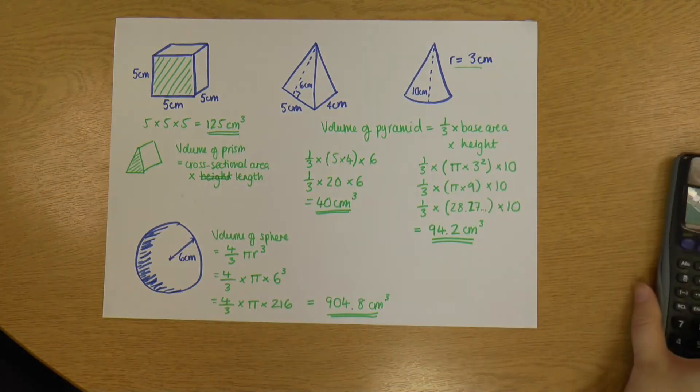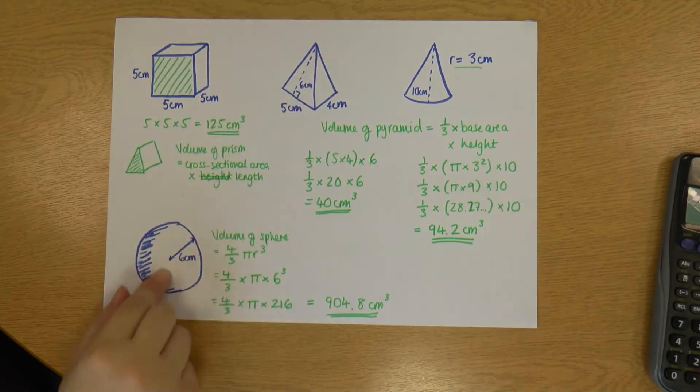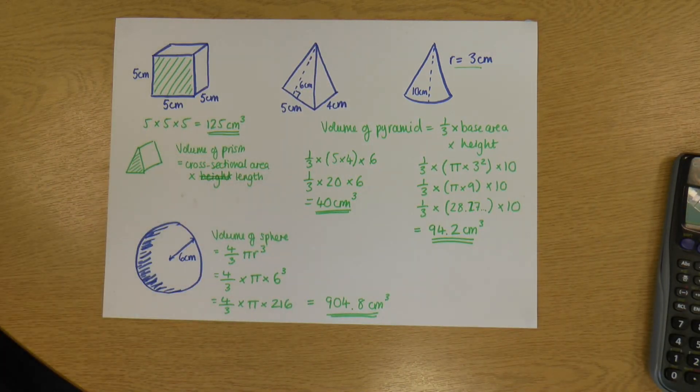So there we've got four different shapes and thinking about prisms as well, where we have found the volume of these shapes.